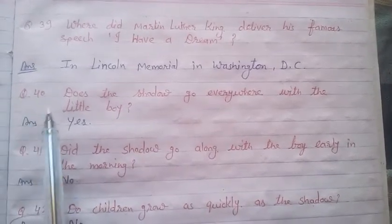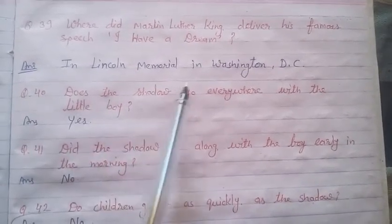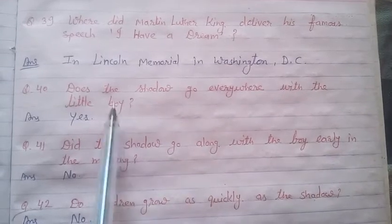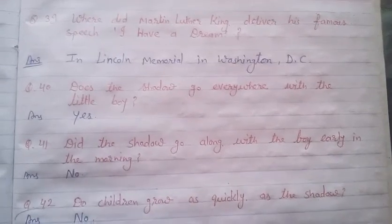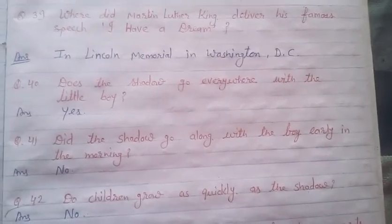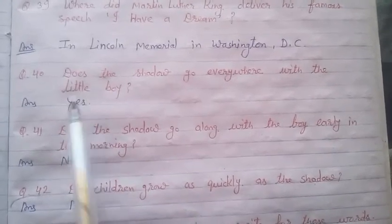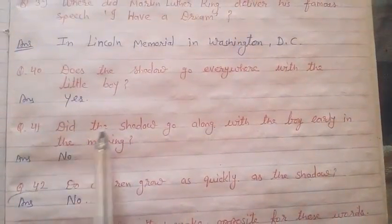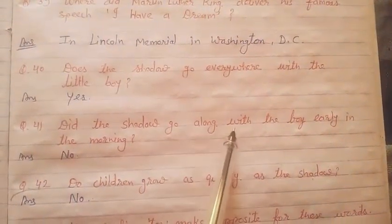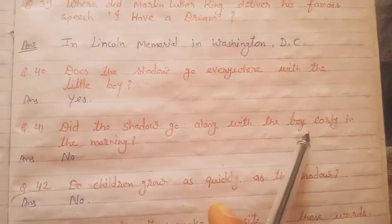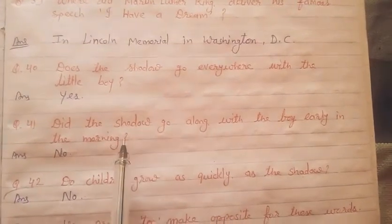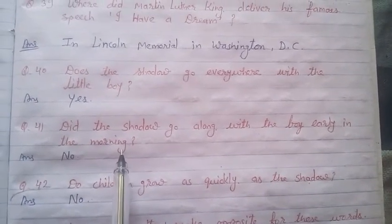Question number 40: Does the shadow go everywhere with the little boy? Kya chhote bachche ke saath uski shadow, uski parchhai, har jagah jaati hai? Yes. Question number 41: Did the shadow go along with the boy early in the morning? Kya bachche ke saath uski parchhai subah bhi uski saath hoti thi? No.